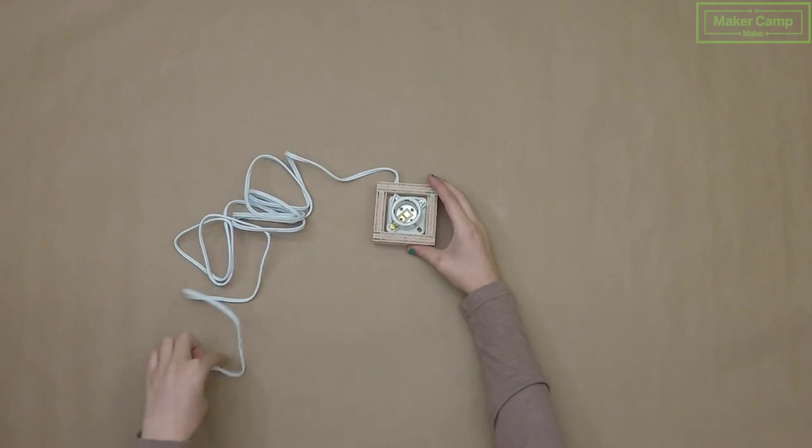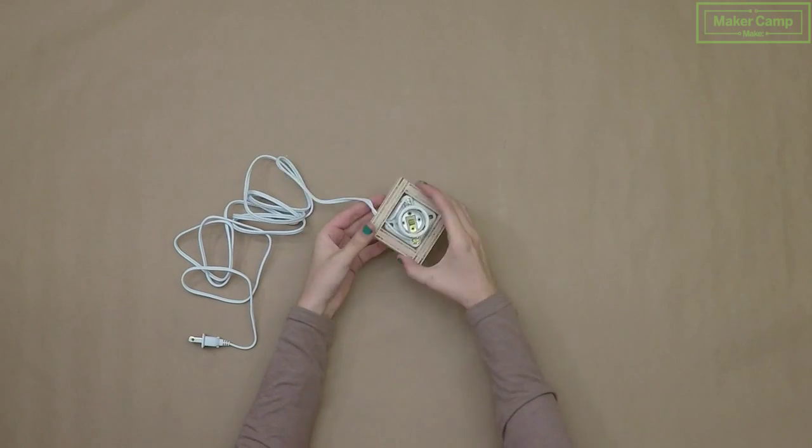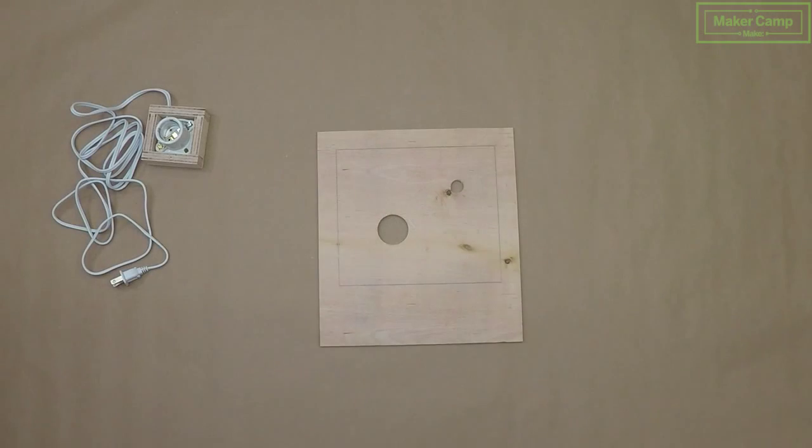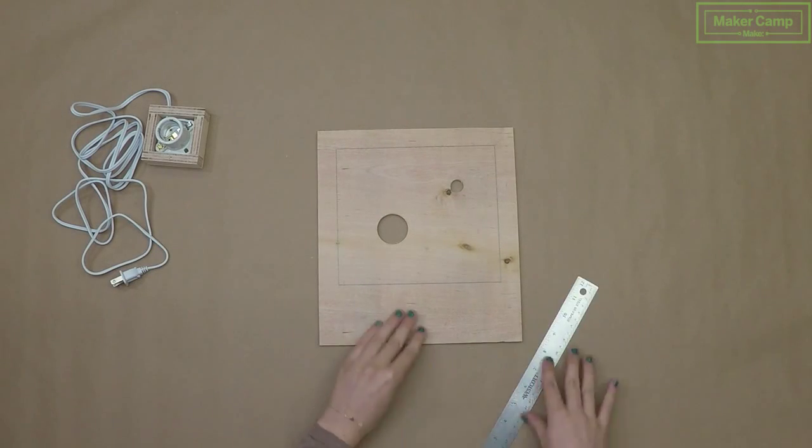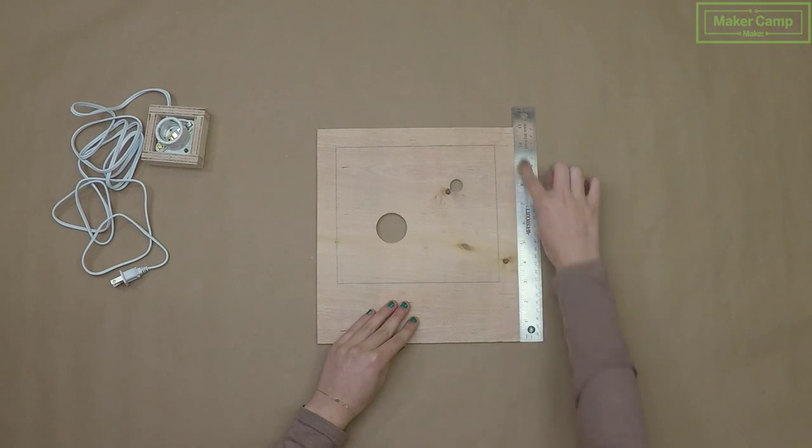Check out part one of our spinning lamp tutorial where you'll learn how to make this base. Now grab your piece of plywood that is 10 inches by 11 inches. Draw a rectangle on it that is large enough to fit both of your gears. Ours is eight inches by seven inches.